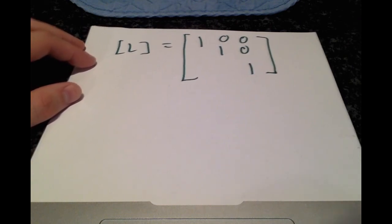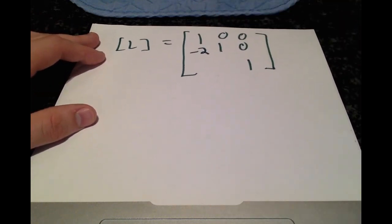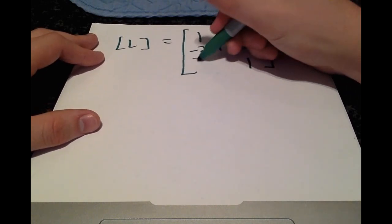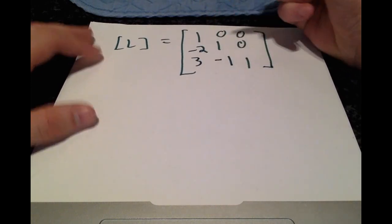So the three multiplication factors, we have negative 2, 3, and negative 1.